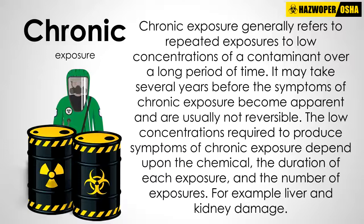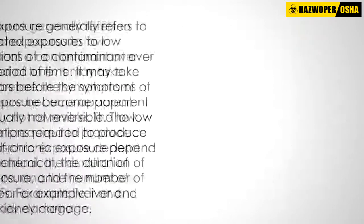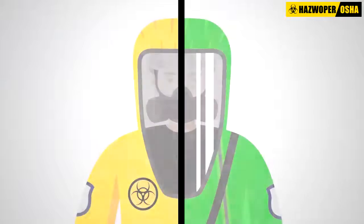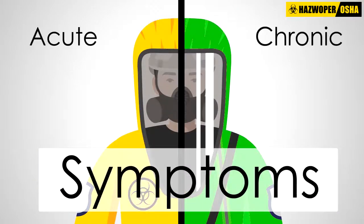Chronic exposure generally refers to repeated exposures to low concentrations of a contaminant over a long period of time. It may take several years before the symptoms of chronic exposure become apparent, and are usually not reversible. The low concentrations required to produce symptoms of chronic exposure depend upon the chemical, the duration of each exposure, and the number of exposures — for example, liver and kidney damage. The symptoms that may result from an acute exposure may be completely different from those resulting from chronic exposure to a chemical.